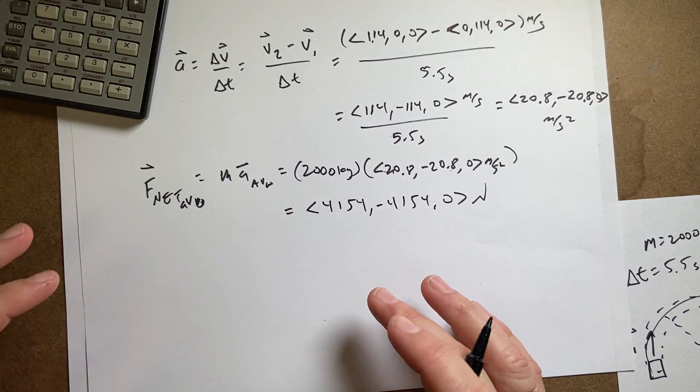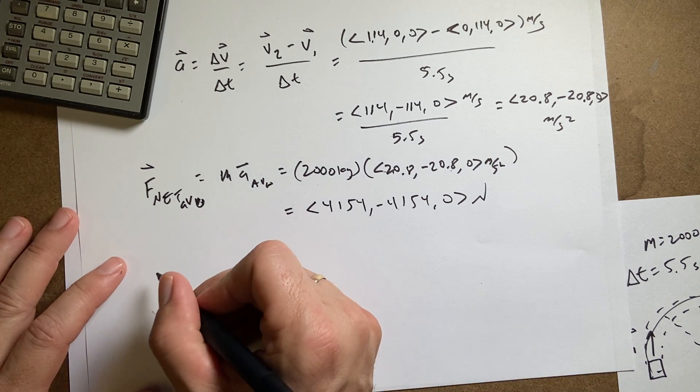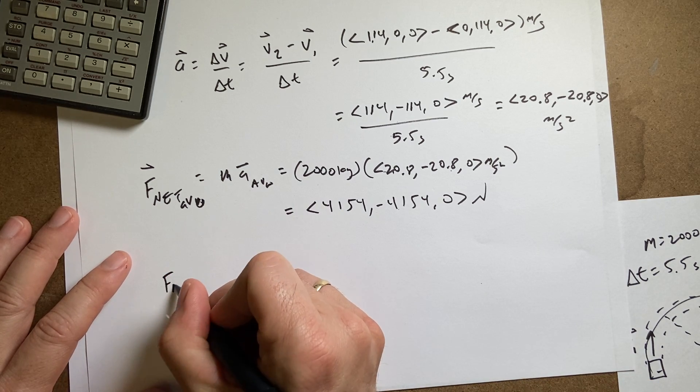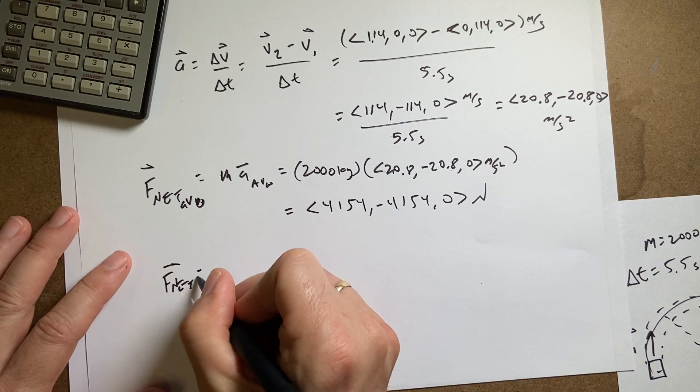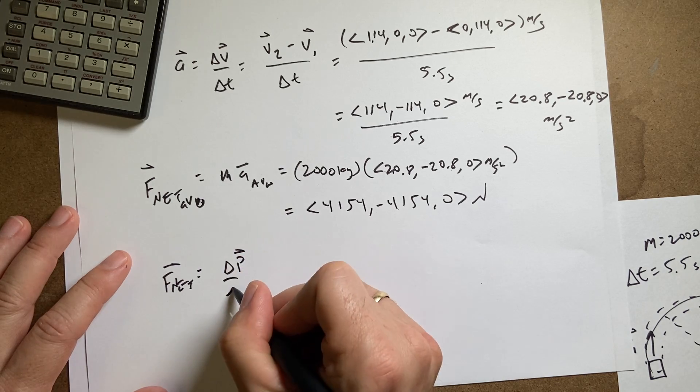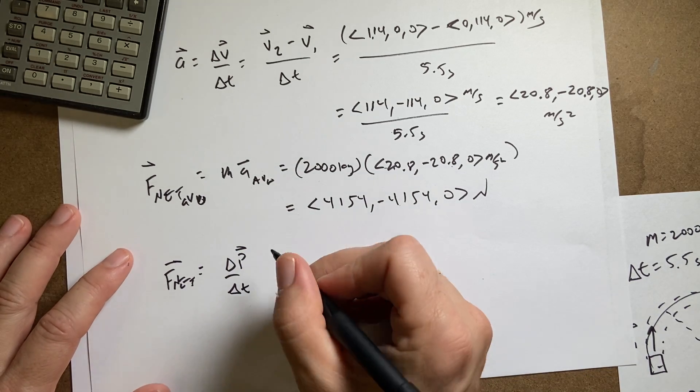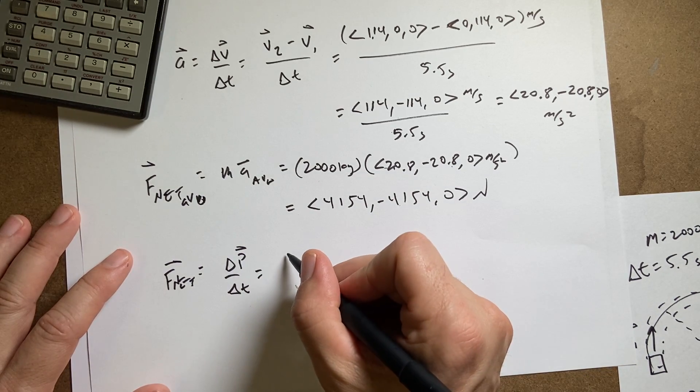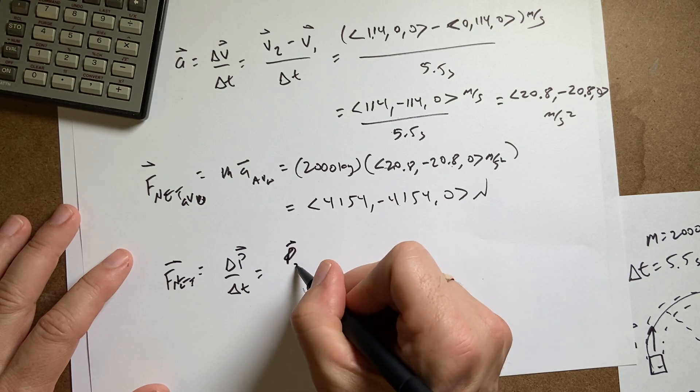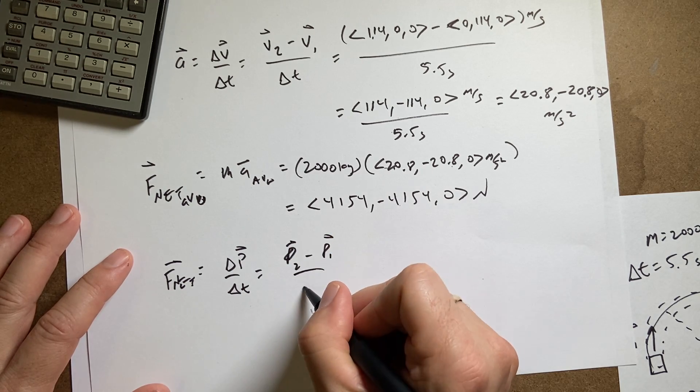Finally, let's do the change in momentum. So what if I did this? F net equals delta P over delta T. You're going to see that I get the same thing. Because I can write this as P2 minus P1 over delta T.